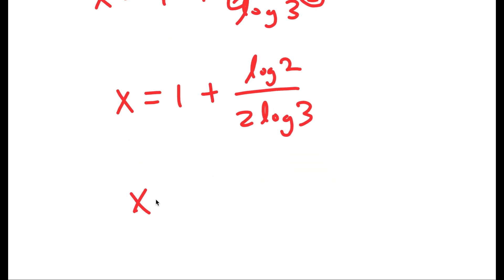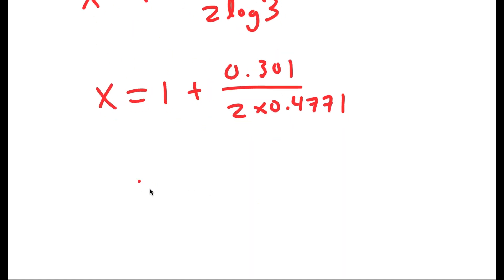And this is equal to 0.301 over 2 times 0.4771, which is equal to 1 plus 0.315. So x is equal to 1.315.